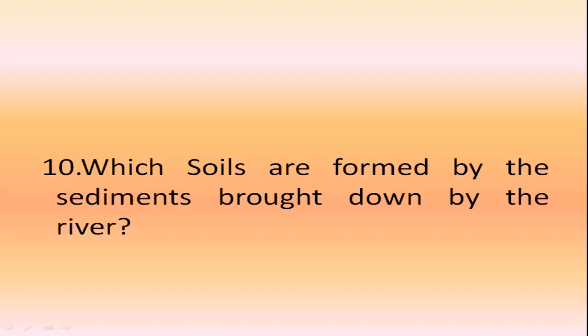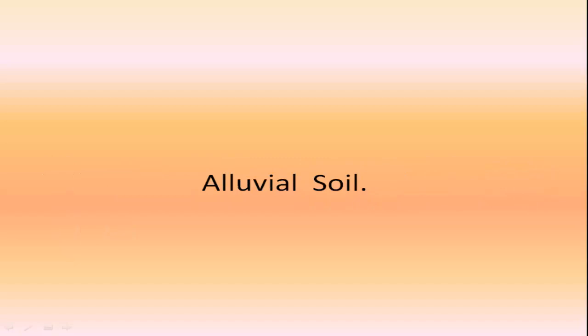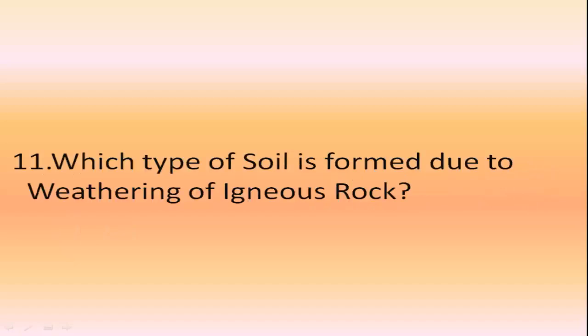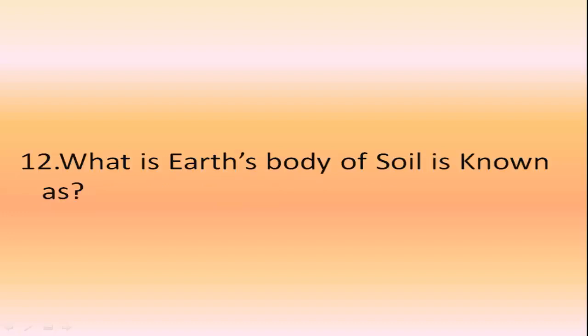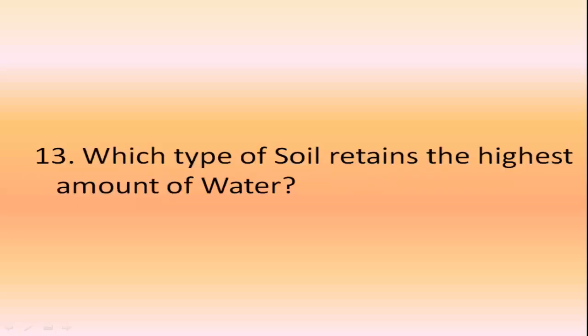What is the mixing of soil by activities of animals called? Pedoturbation. Which soil is formed by the sediments brought down by rivers? Alluvial soil. Which type of soil is formed due to weathering of igneous rock? Red soil. What is the earth body of soil known as? Pedosphere.